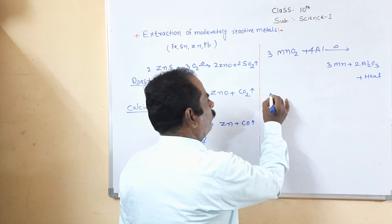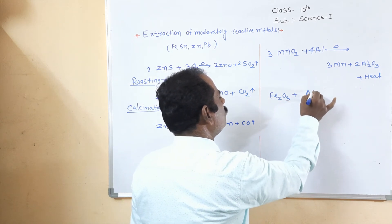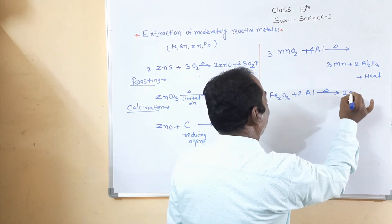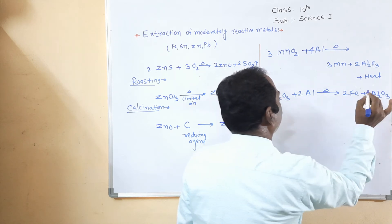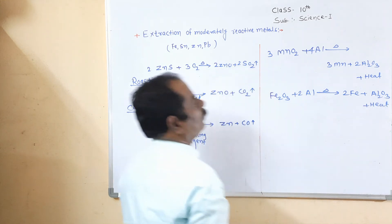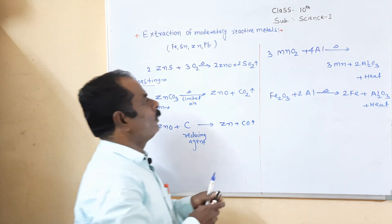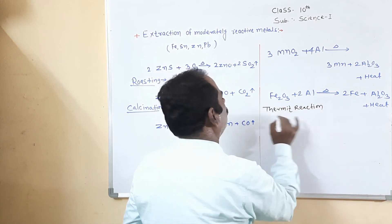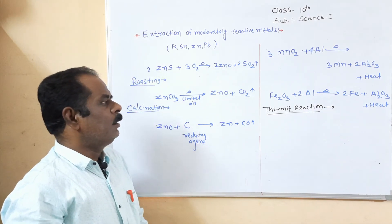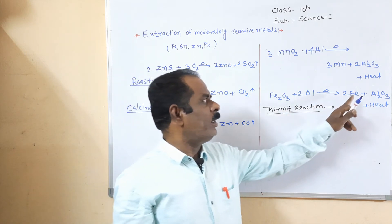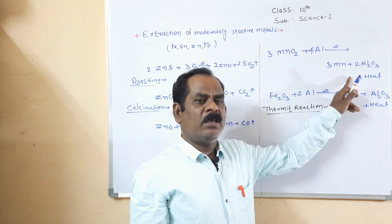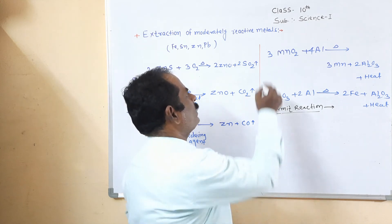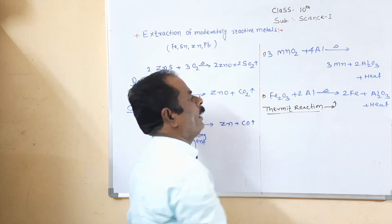A second example is iron oxide (Fe2O3). From iron oxide, we extract iron using aluminium as a reducing agent. When iron oxide is strongly heated with aluminium powder, we get iron in the molten state and aluminium oxide, with a large amount of heat evolved. These two reactions are called thermite reactions. A thermite reaction is defined as a reaction in which a large amount of heat is evolved and we get a metal in the molten state.